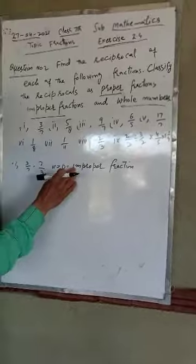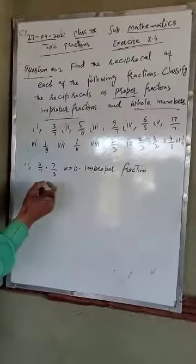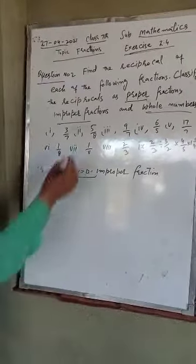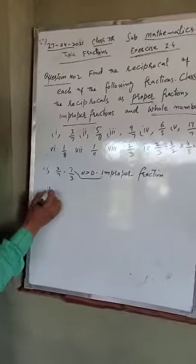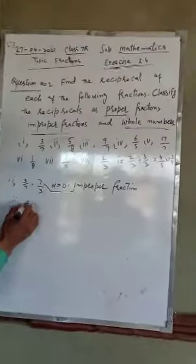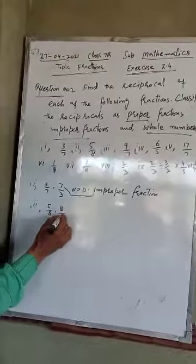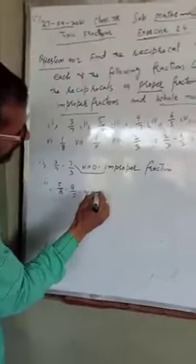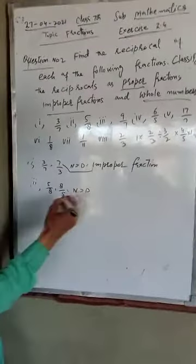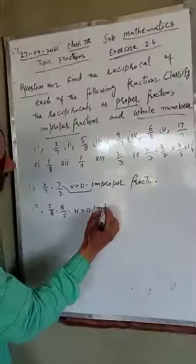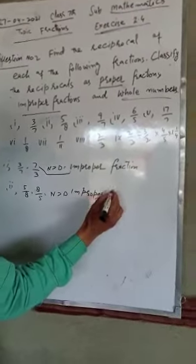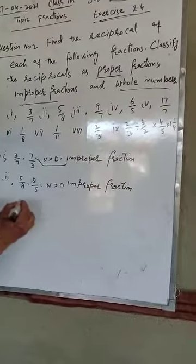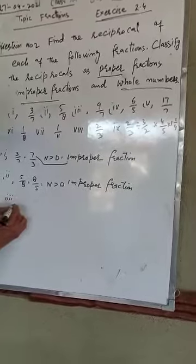So 7 by 3 is an improper fraction. Ab part number two par jayenge: 5 divided by 8. Iska reciprocal 8 by 5 hai. Yahan bhi numerator is greater than the denominator, so the fraction is improper fraction. Yeh bhi improper fraction hai.